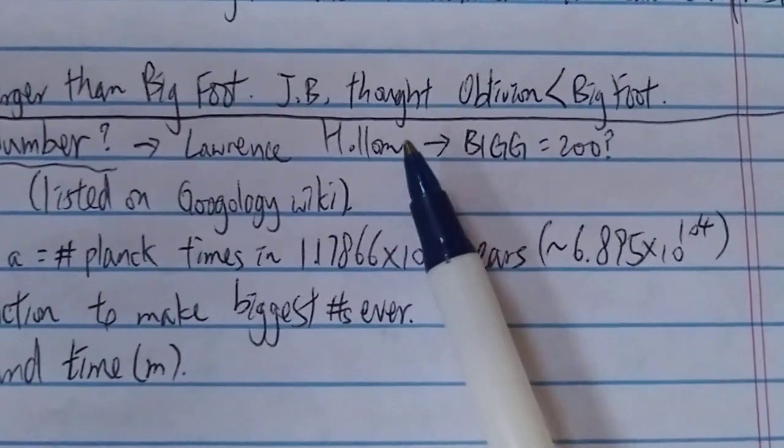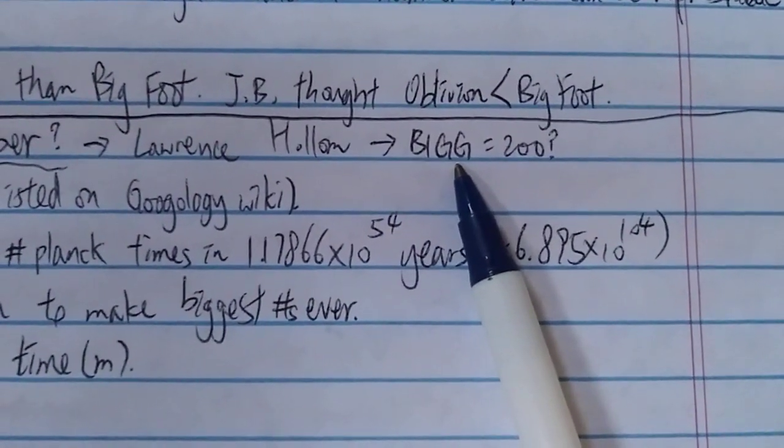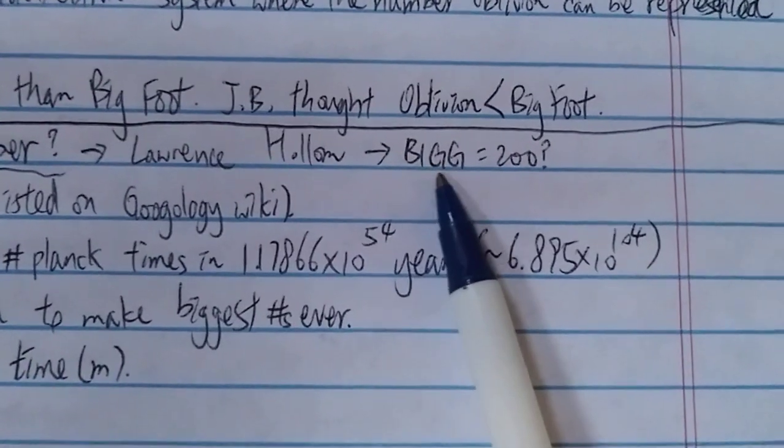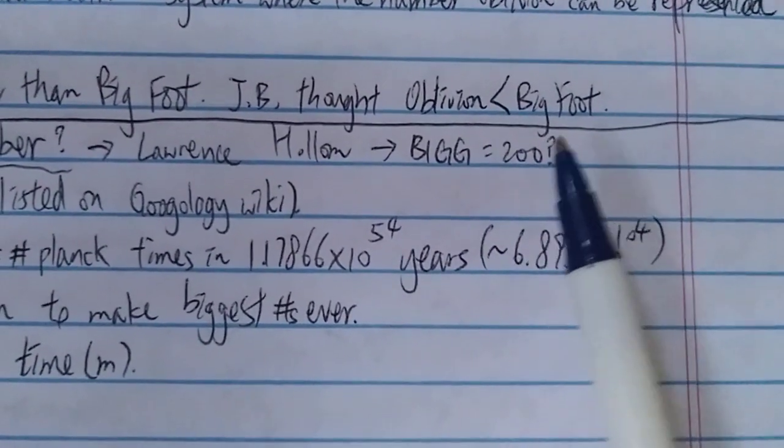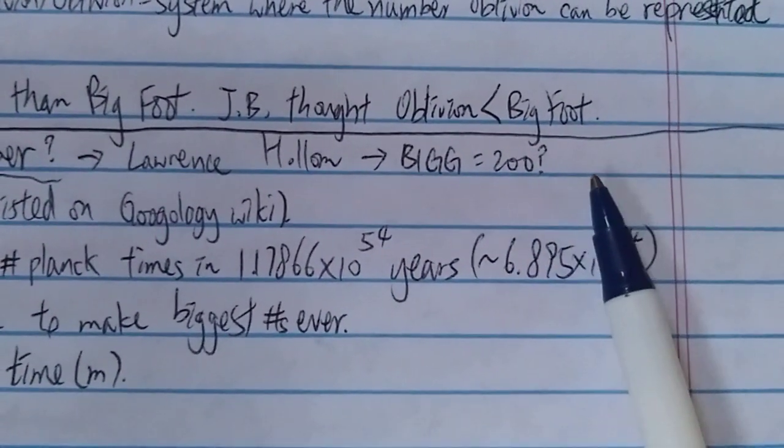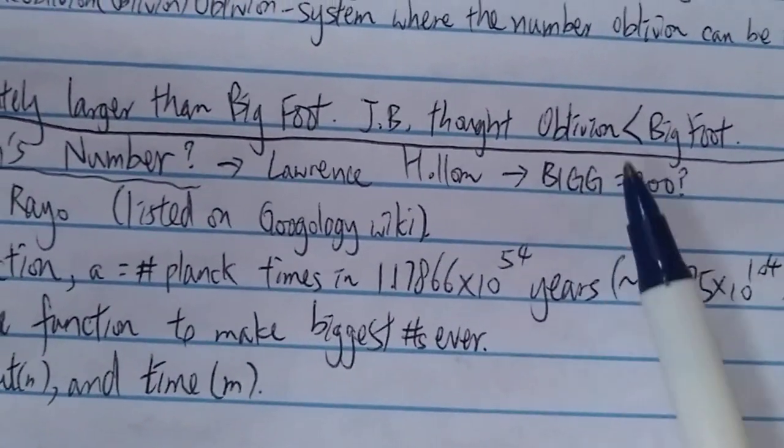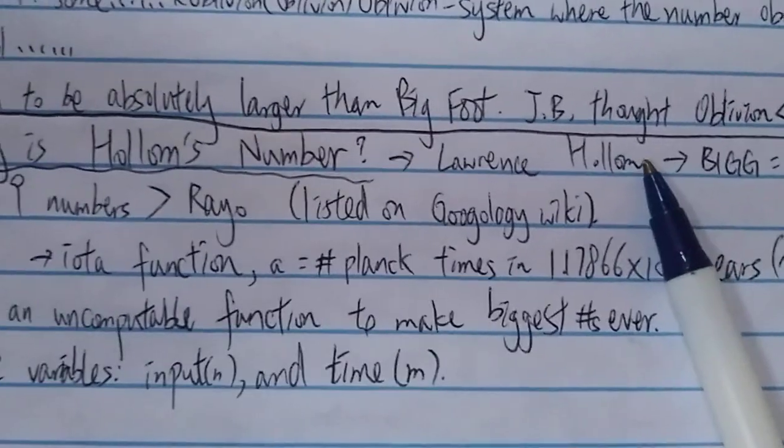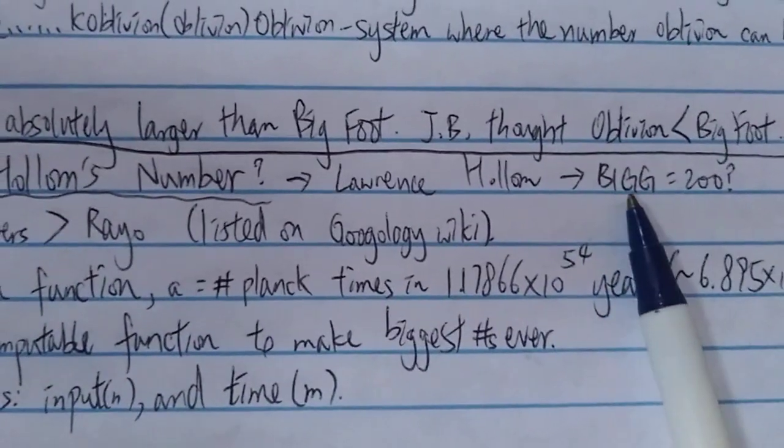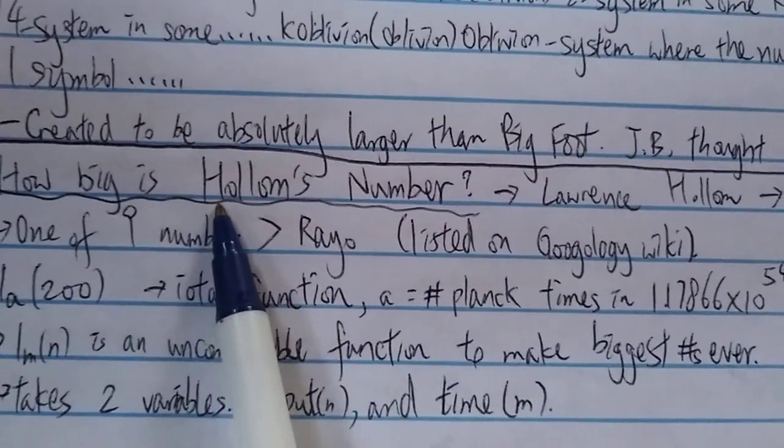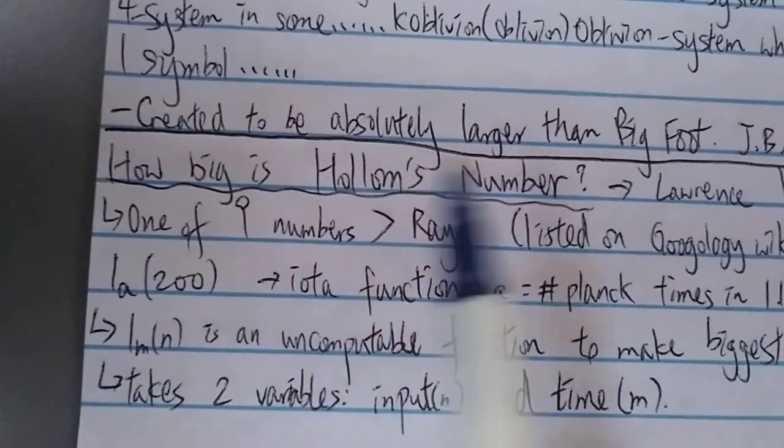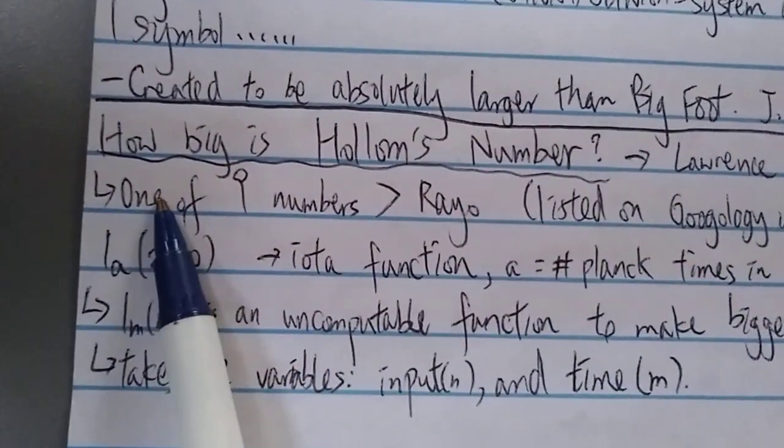Hallam is also the creator of this big number named Big, which is 200 question mark. This is, I believe, from the hyperarray hyperfactorial array notation, something like that, another very big number. However, we're not going to look at this. We're going to look at Hallam's number.